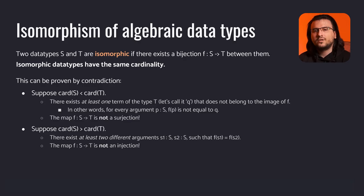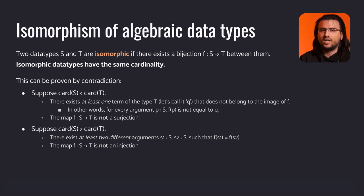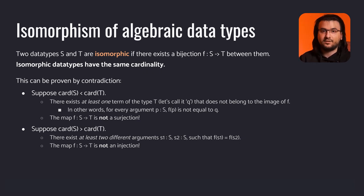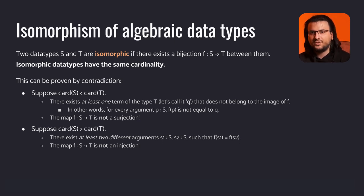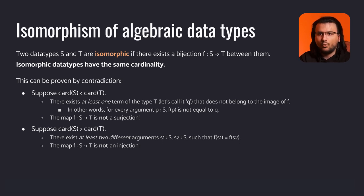Moving on to type isomorphism: two types are isomorphic if there exists a bijection between them. This implies that the cardinalities of those types — their mathematical representations — have to be equal, and this statement can be proven by contradiction. Recall that a function is bijective if and only if it is surjective, meaning for every element in the target set there exists an element in the domain that maps to it, and injective, meaning different values get mapped to different results. Given that the cardinalities of the domain S and target T differ, we need to prove the map is not bijective — either not surjective or not injective.